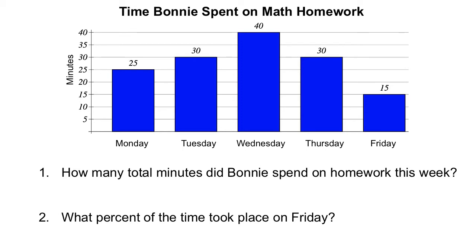What we would need to do is total up the number of minutes. So we're going to take 25 plus 30 plus 40 plus 30 plus another 15 to get our total amount of time that Bonnie spent on her homework this week. If we total those all together we should get 140 minutes.